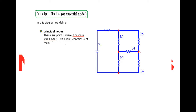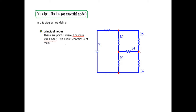Before we go into the actual problem solving, a couple of points: we define a node, or principal node, where three or more branches meet. So in this diagram you can see one branch, two branch, and three branch meeting — so this is a node. Similarly, here three branches are meeting, so this is a principal node or essential node — we just call it a node.